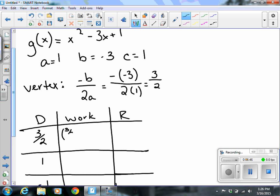So now I'm just going to plug that right into my formula. So I've got 3 halves squared minus 3 times 3 halves plus 1. So when I plug that in, I get negative 1.25. Not a great vertex, but we'll go with it.